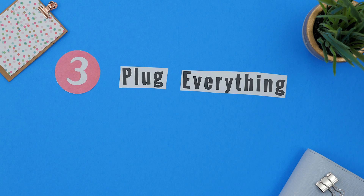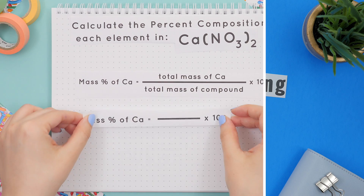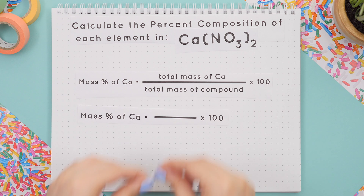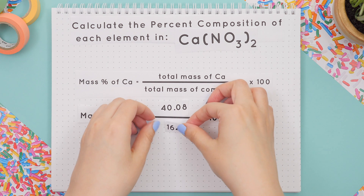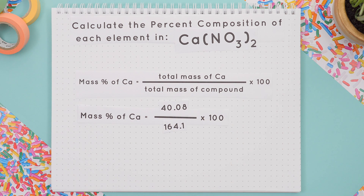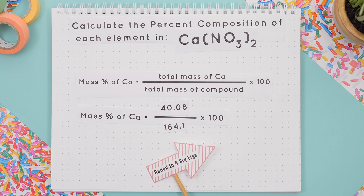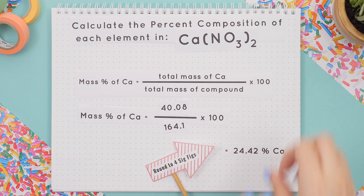Step three: plug everything into the formula. We'll plug in calcium's mass and the mass of the compound and divide first, then multiply by 100, and we'll round to four sig figs to get our percent composition of calcium.